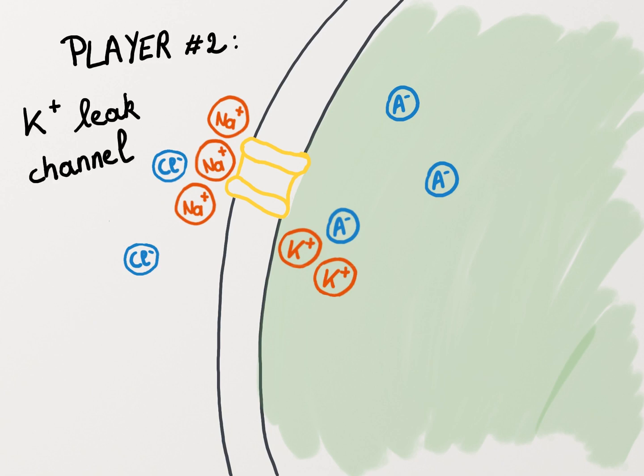The second player responsible for the rest potential is the potassium leak channel. These leak channels are an example of passive transport in which potassium ions move down their concentration gradient.